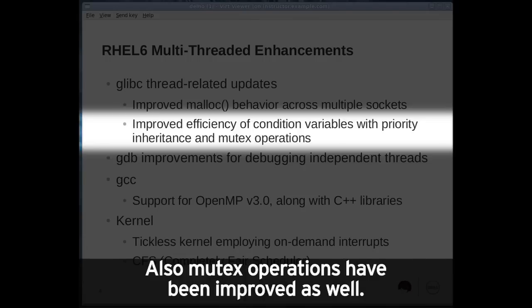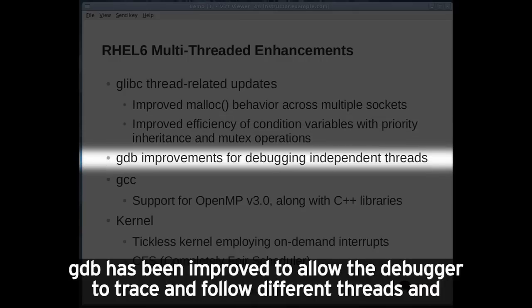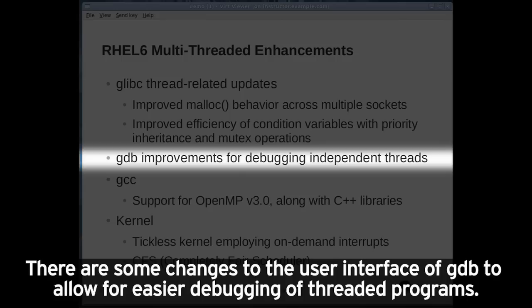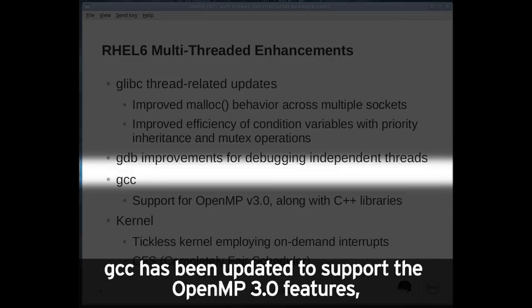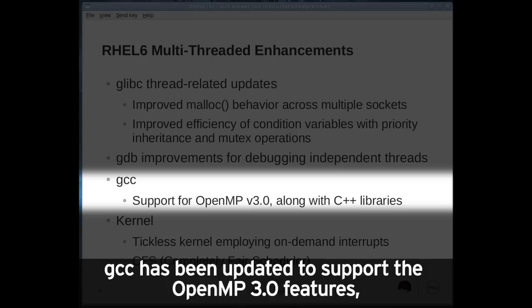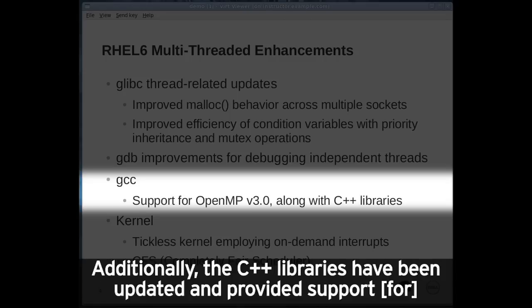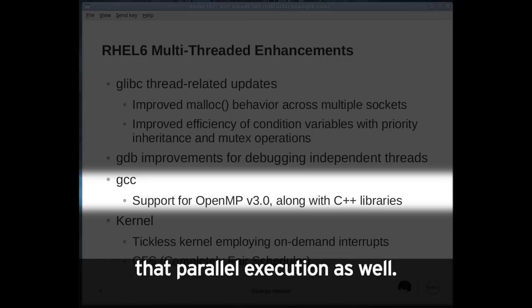Mutex operations have been improved as well. GDB has been modified to allow the debugger to trace and follow different threads, giving the programmer control to step through a particular thread and debug it. There are also changes to the GDB user interface for easier debugging of threaded programs. GCC has been updated to support OpenMP 3.0 features, which allows extensions to the C language for parallelism, and the C++ libraries have been updated to support parallel execution as well.